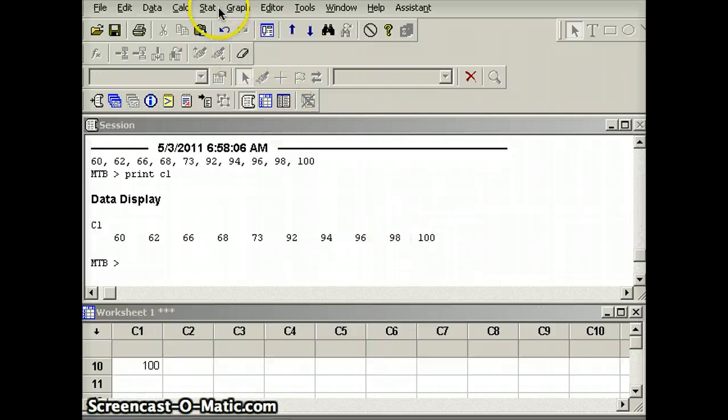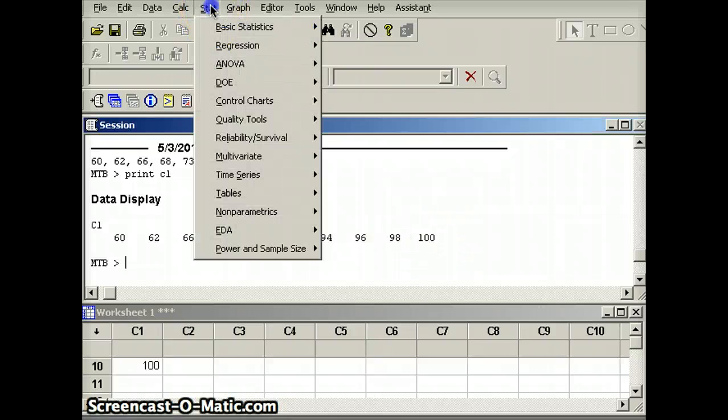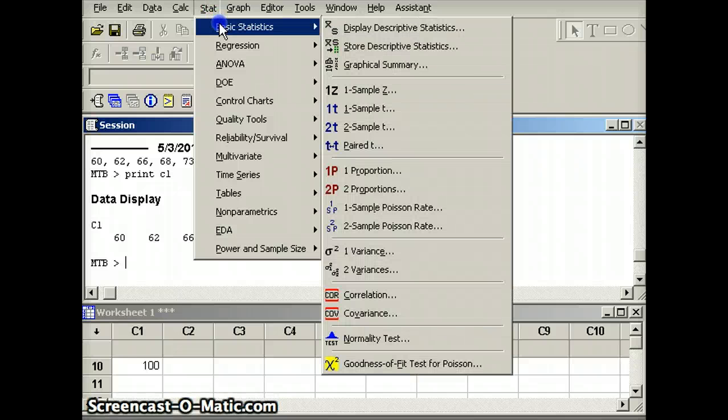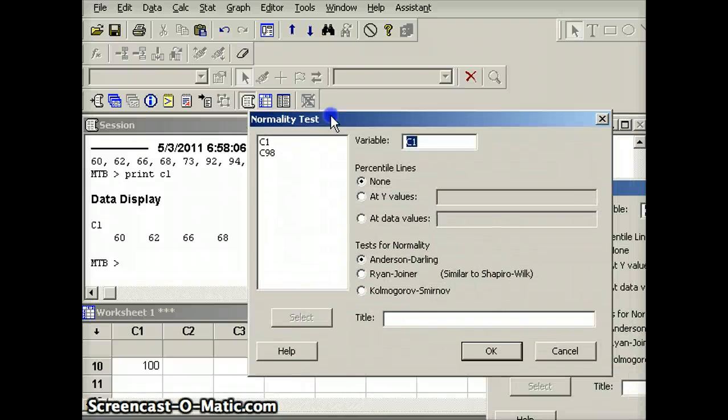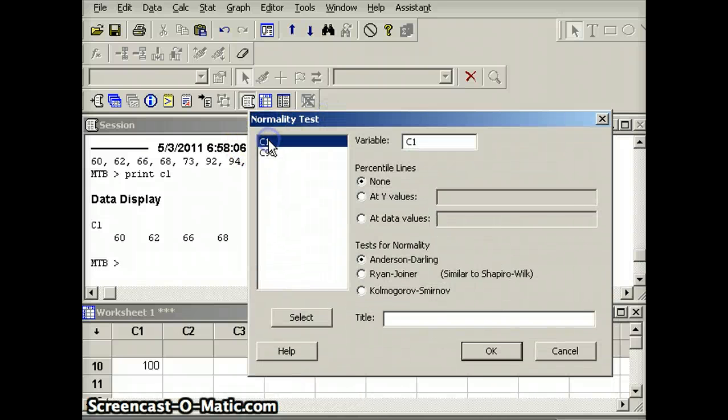Now, to do a normality test, we're going to go up to the Stat button, go to Basic Statistics, and then we're going to look at Normality Test. The data I'm interested in is C1, so I'm going to take C1, I'm going to say Select. And I have three different normality tests. I just tend to use Anderson-Darling. That seems to work fairly well.